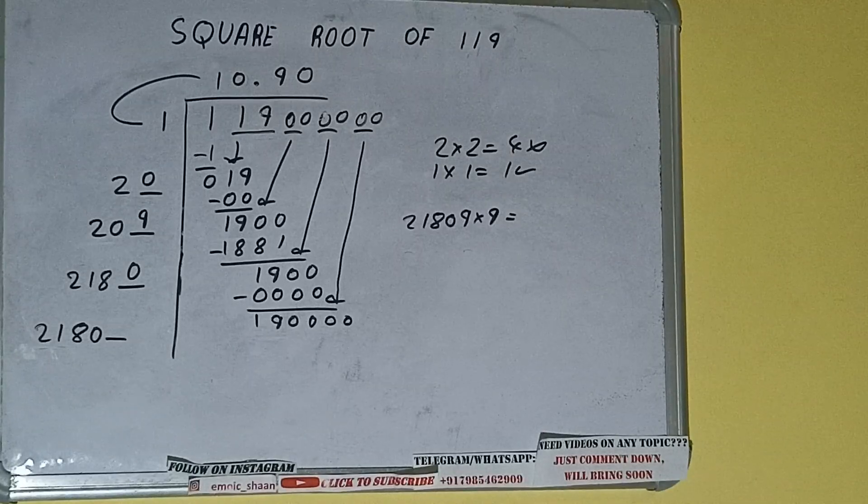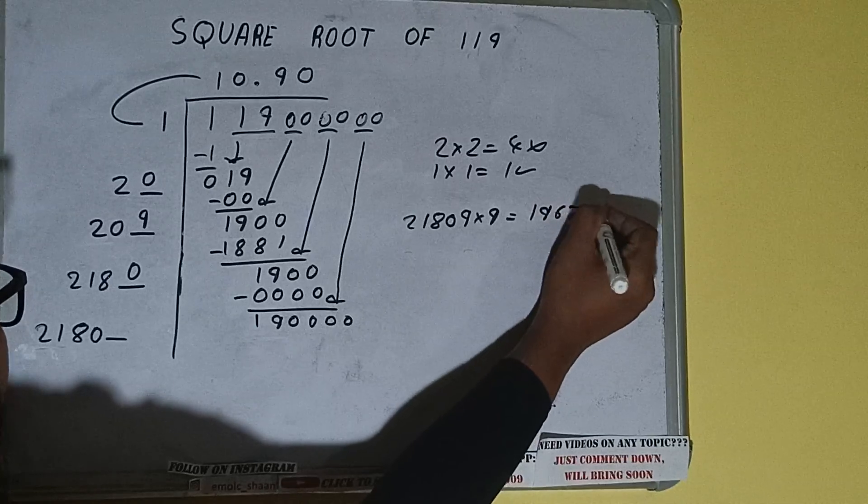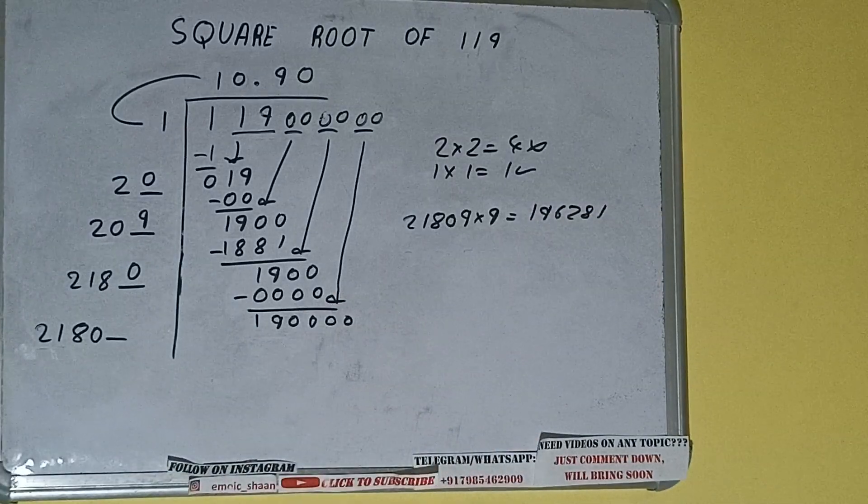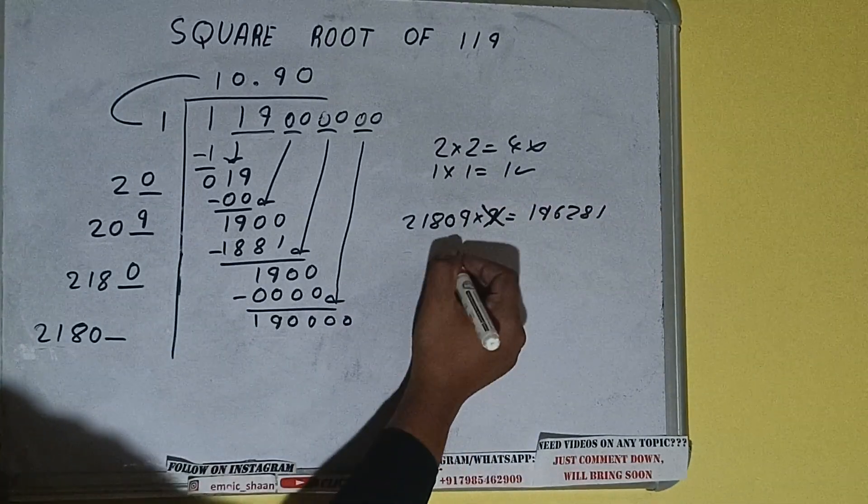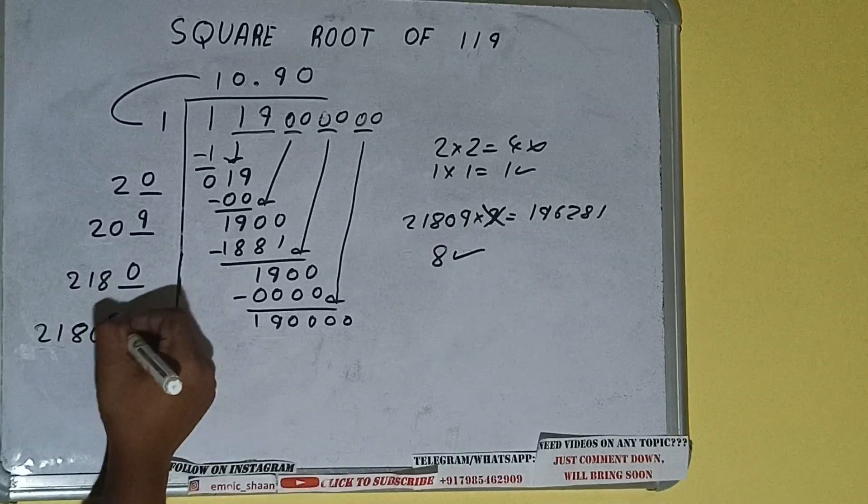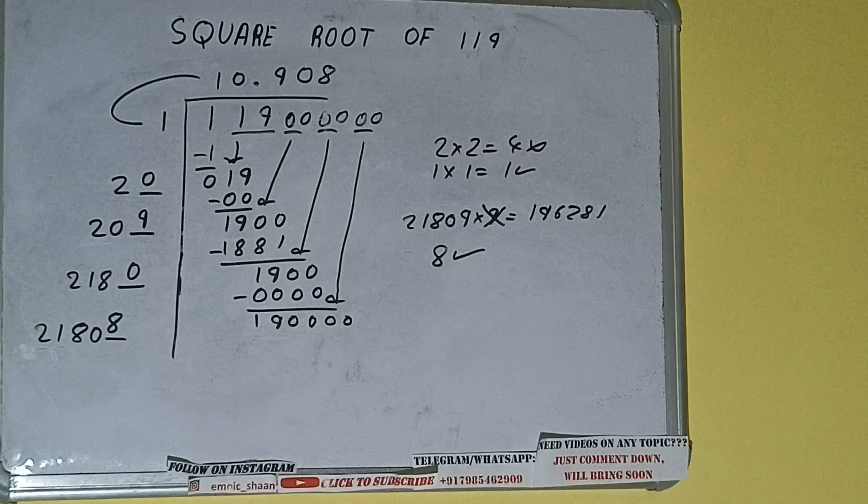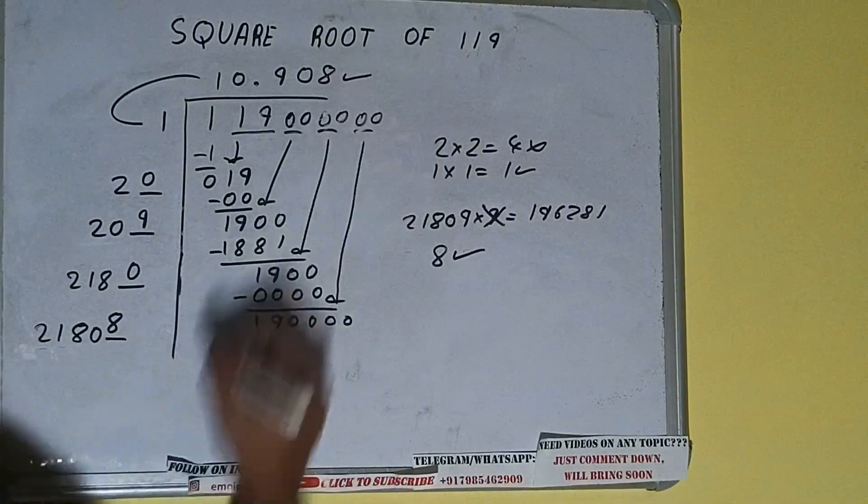And we will be getting 196281, which is slightly bigger than this number. So 9 times will not work, but with this we can understand that 8 will surely work. So 8 here and 8 here.